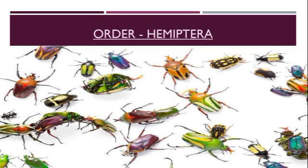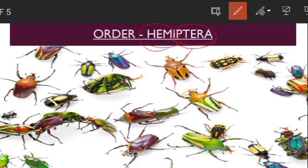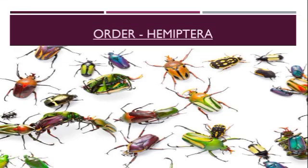Welcome to another video lecture on our entomology paper. In this video lecture we are going to learn about the order Hemiptera. 'Hemi' means half and 'pteron' means wings, so it refers to half wings. Hemipteran insects are adapted for drawing sap — they are mostly sap suckers or blood suckers. They are plant parasites or animal parasite insects included in this order. Majority of them are sap suckers, but some of them are predators or ectoparasites.